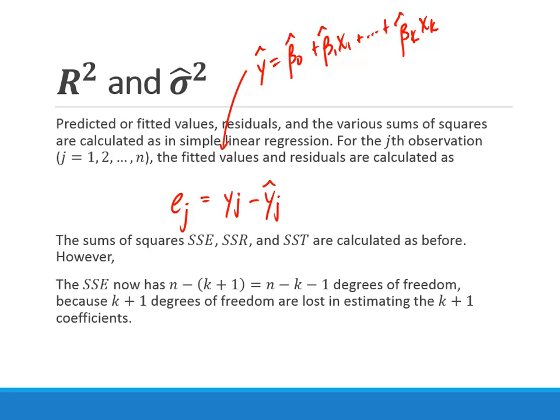The degrees of freedom change because we have more predictor variables. The error sum of squares now has n minus k minus 1 degrees of freedom — we're subtracting k plus 1 things we're estimating. In simple linear regression, k was equal to 1, so n minus k minus 1 was just n minus 2, which was the degrees of freedom for error then. This is just a more general case of what we've already seen.